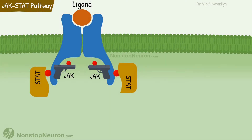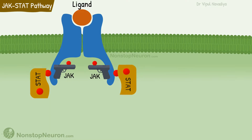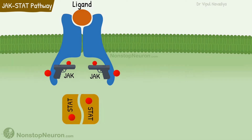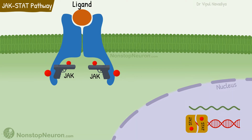The phosphotyrosine now invites STATs to the party. STATs stands for signal transducers and activators of transcription. Now the JAK phosphorylates STATs also. Then STATs dissociate from the receptor and form a dimer. The dimer now goes to the nucleus and regulates gene transcription, eventually producing the response.